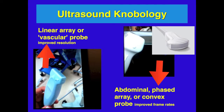There are two major probes. The first, on the left, is called a linear array or vascular probe. These typically have higher frequencies, and because of that they have improved resolution but not increased depth. These probes are used for looking at superficial structures such as veins and arteries, as well as for vascular access.